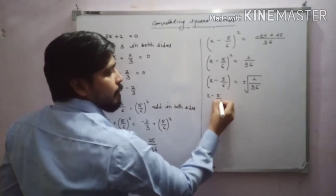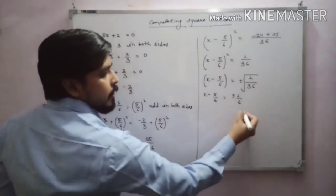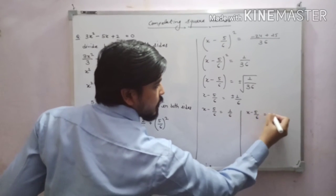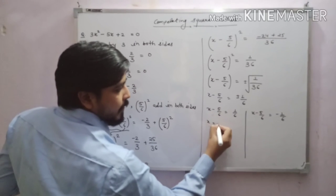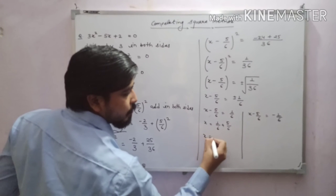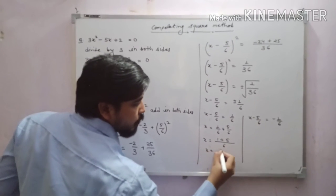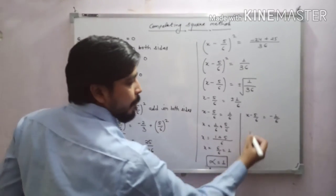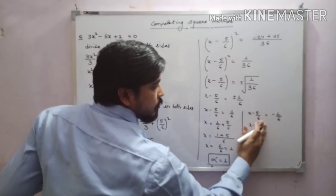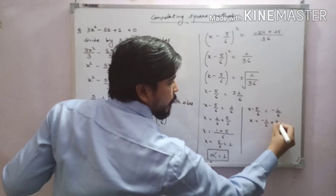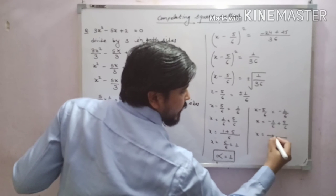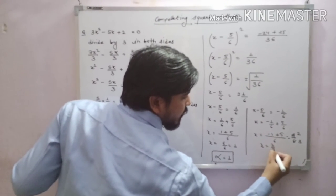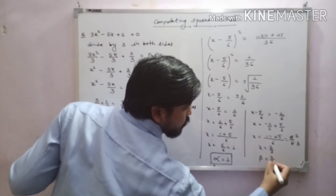So x − 5/6 = ±1/6. We split into two cases. Case 1: x − 5/6 = 1/6 → x = 1/6 + 5/6 = 6/6 = 1. So one zero of this quadratic equation is 1. Case 2: x − 5/6 = −1/6 → x = −1/6 + 5/6 = 4/6 = 2/3. So the second zero is x = 2/3.